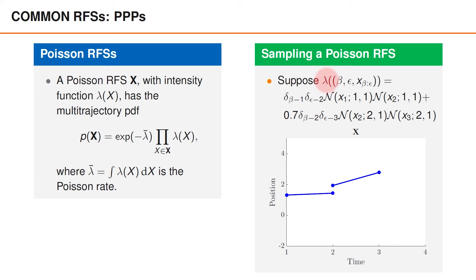For instance, suppose the intensity function is a mixture where the first component represents trajectories that start at time 1 and end at time 2, whereas the second component represents trajectories that start at time 2 and end at time 3. For simplicity, the elements and the trajectories are again assumed to be independent Gaussian scalar random variables. If we integrate over the intensity function, the first component integrates to 1, whereas the second component integrates to 0.7, which means that the expected number of elements in the set is 1.7.